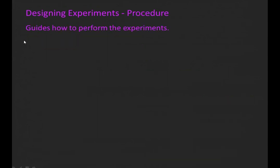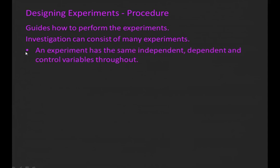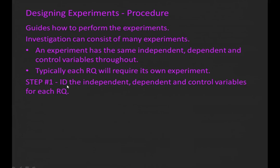Now, let's take a look at writing an experimental procedure. The procedure guides how we perform the experiments. An investigation can consist of many experiments. The definition of an experiment is something that has the same independent, dependent, and control variables throughout. So typically, each research question will require its own experiment. Step one in the process is to identify the independent, dependent, and control variables for each research question.